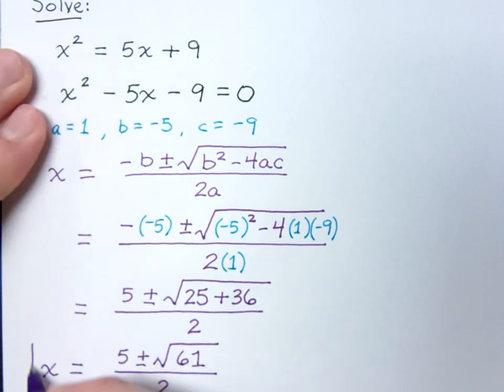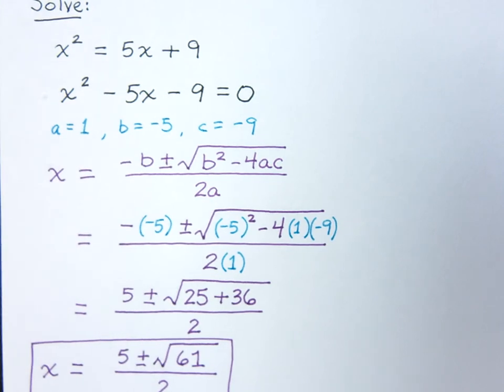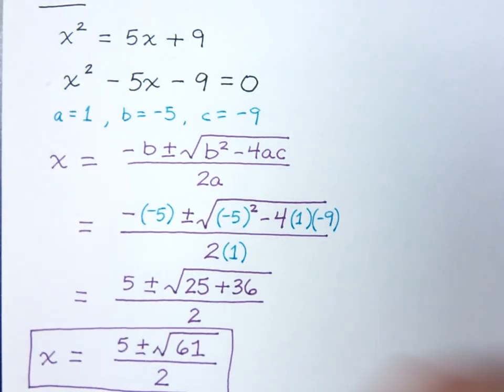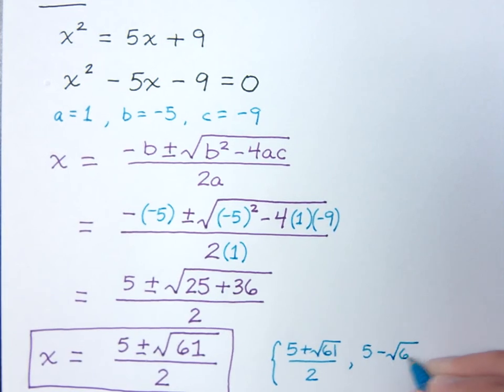x equals 5 plus or minus the square root of 61 all over 2. Now, if you need to write this using set notation, your set notation would look like this: 5 plus the square root of 61 over 2, and your other solution is 5 minus the square root of 61 over 2.